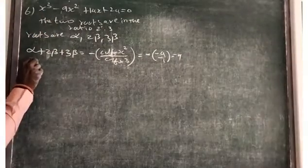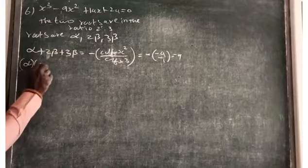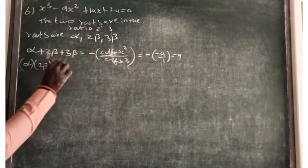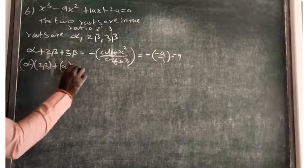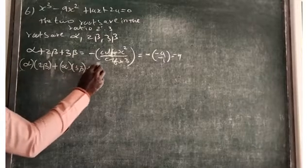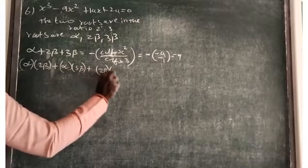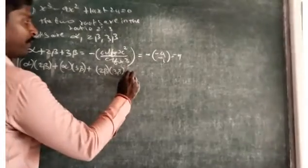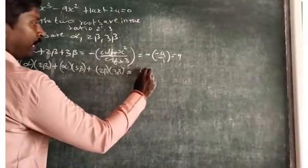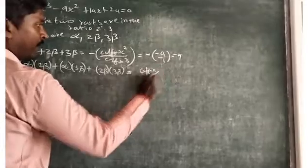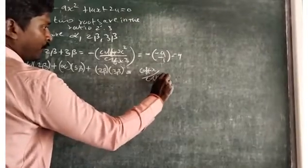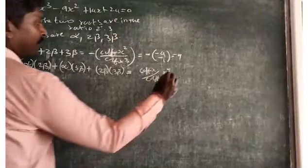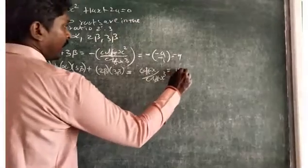Next, the sum of products of pairs: alpha times 2 beta, plus alpha times 3 beta, plus 2 beta times 3 beta equals the coefficient of x by the coefficient of x cubed, that is c by a. So, the coefficient of x is 14 by 1, giving us 14.